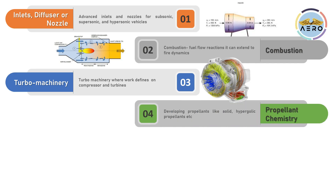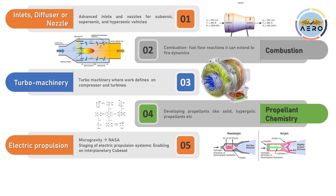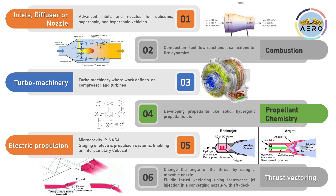In rocket propulsion, there is a lot of work on developing propellants — solid, hypergolic, and monopropellants — also known as propellant chemistry. Electric propulsion is another area, including microgravity research that NASA is working on experimentally, as well as CubeSats. Thrust vectoring, both primary and secondary, is widely used in rocket propulsion and spacecraft.